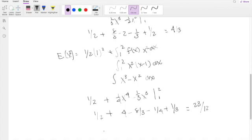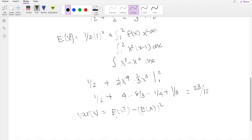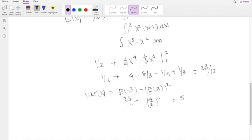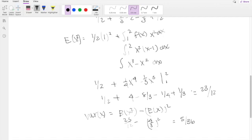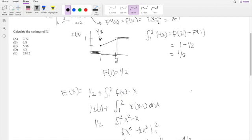So then the variance, we know from the variance formula, equals the second moment minus the first moment squared. So it's 23/12 minus (4/3) squared, which equals 5/36, which is our answer C.